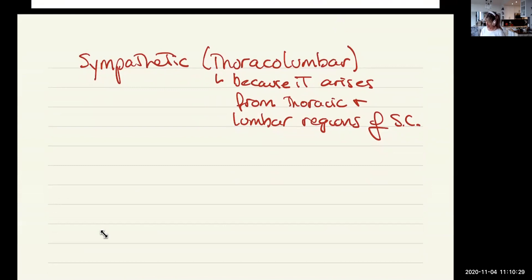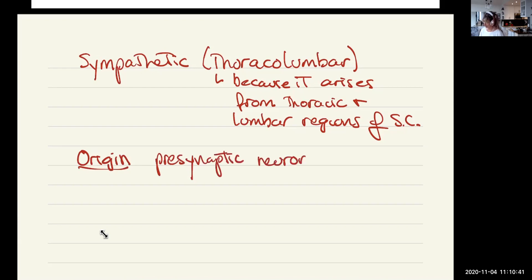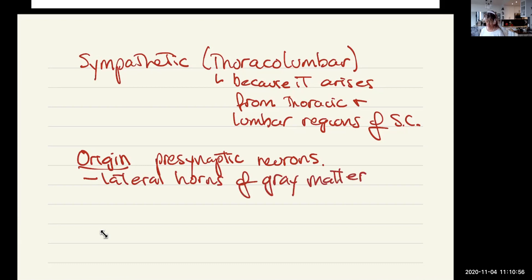The origin of the presynaptic neurons is the lateral horns of gray matter, from T1 to L2 — thoracic vertebra 1 to lumbar vertebra 2.